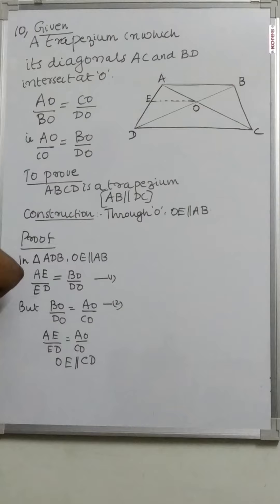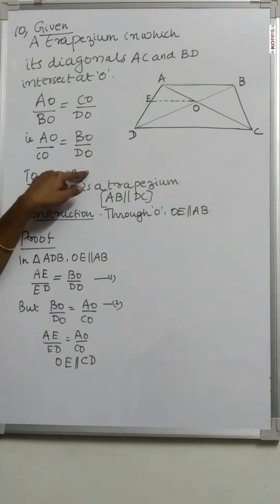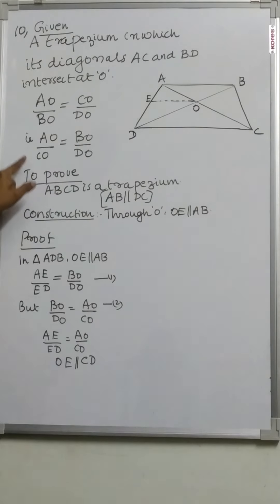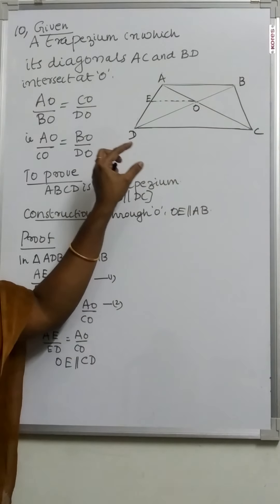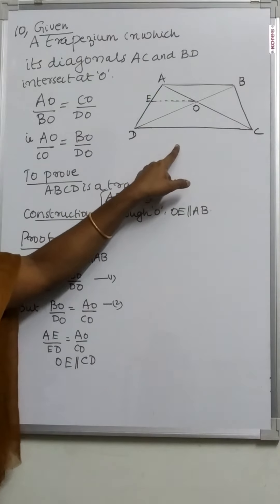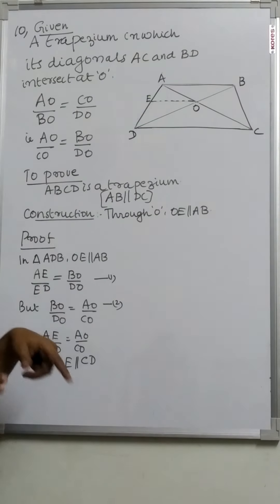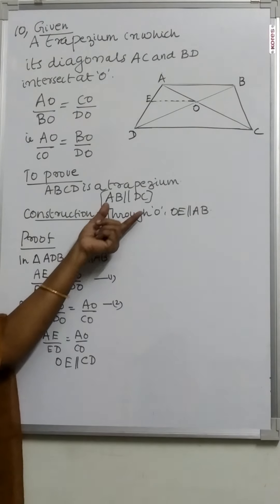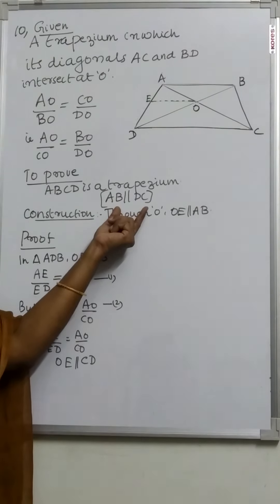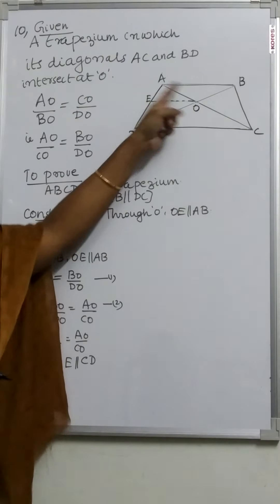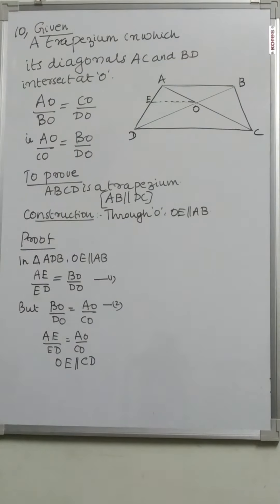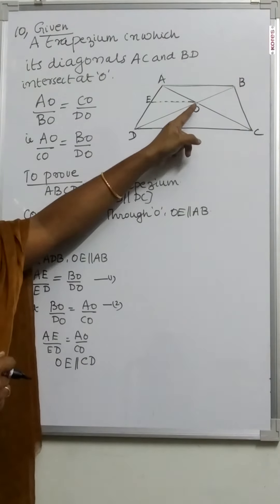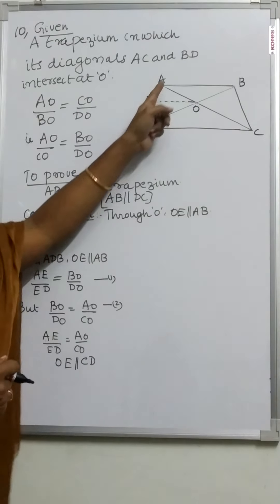We can rewrite AO by BO equal to CO by DO as AO by CO equal to BO by DO. To prove ABCD is a trapezium, we need to prove AB is parallel to CD. Construction: draw OE parallel to AB.